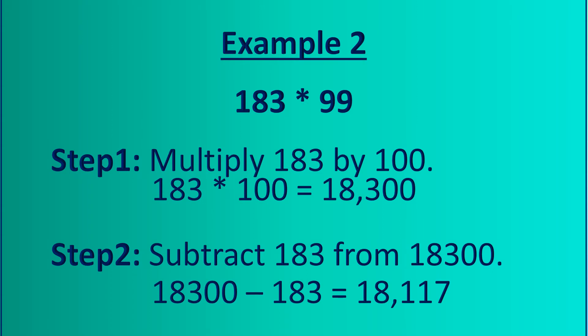We will see another example now. 183 multiplied by 99. Step 1: multiply 183 by 100 — the answer is 18300. Step 2: subtract 183 from 18300. The final answer is 18117.